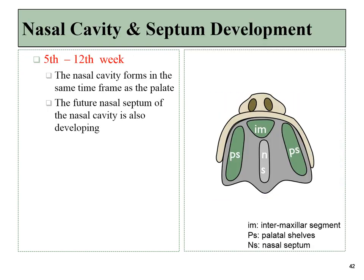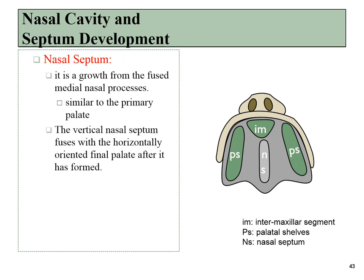The bony portion where the palatal shelves fuse is called the median palatine suture, whereas the ectodermal portion is known as the median palatine raphe, which can be seen in the oral cavity. Fusion should be complete by the 12th week. We also have the developing nasal septum, which must fuse with the palatal shelves. It is growing downwards and will also fuse with the medial nasal processes, forming a vertical nasal septum.